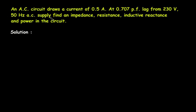If you find this video helpful, feel free to donate whatever amount you can — link is in the description below. An AC circuit draws a current of 0.5 Ampere at 0.707 power factor lagging from a 230V, 50Hz AC supply. Find the impedance, resistance, inductive reactance, and power in the circuit.